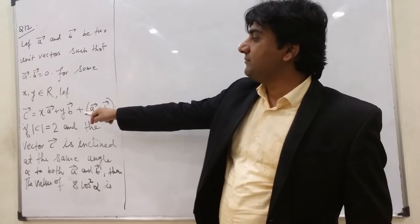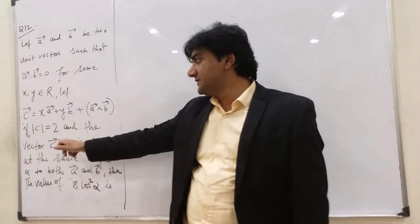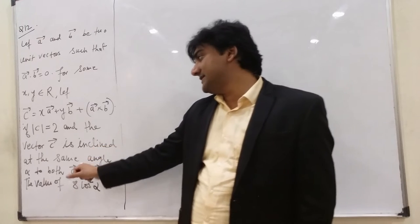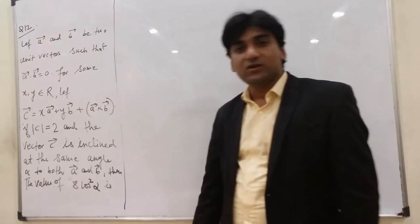C equals x A plus y B plus A cross B vector. If modulus of C is 2 and vector C is inclined at the same angle alpha to both A and B, then the value of 8 cos squared alpha is what?